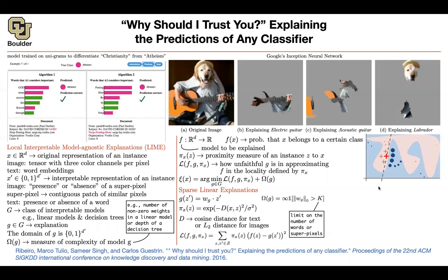Student question: Are super pixels specific to one image — how would a super pixel of a dog's face be present in any other image? That's a great question. We are focusing on a particular data point — it's that specific image we are trying to explain. So these super pixels are not generalizable; it's not the presence of a dog's face as a super pixel within any image, but just this one in particular.